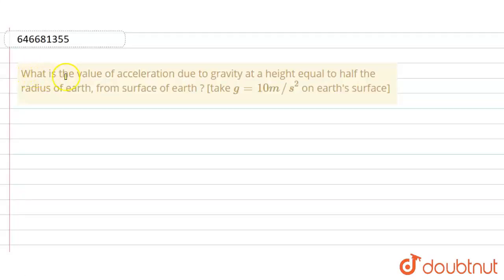Hello everyone. What is the value of acceleration due to gravity at height equal to half the radius of earth from surface of earth? Take g is equal to 10 meters per second squared on earth's surface.